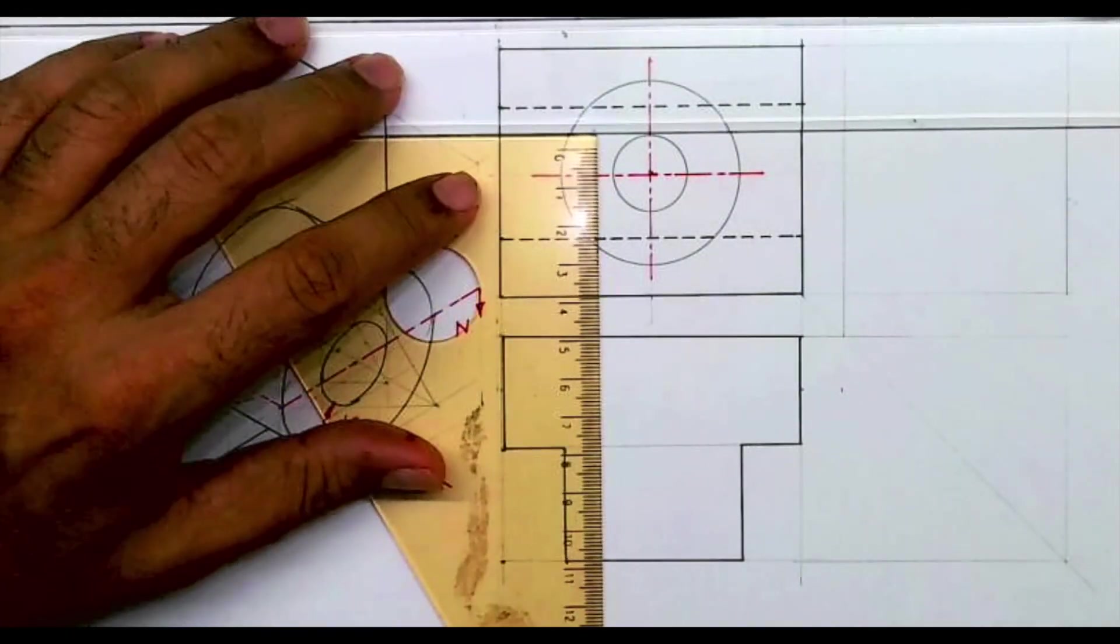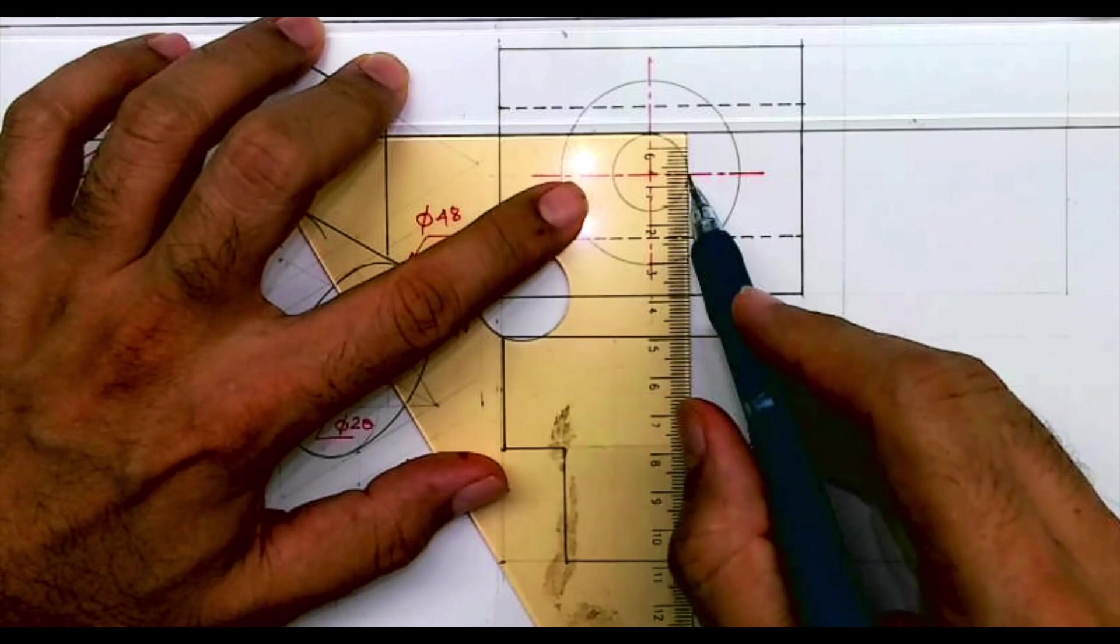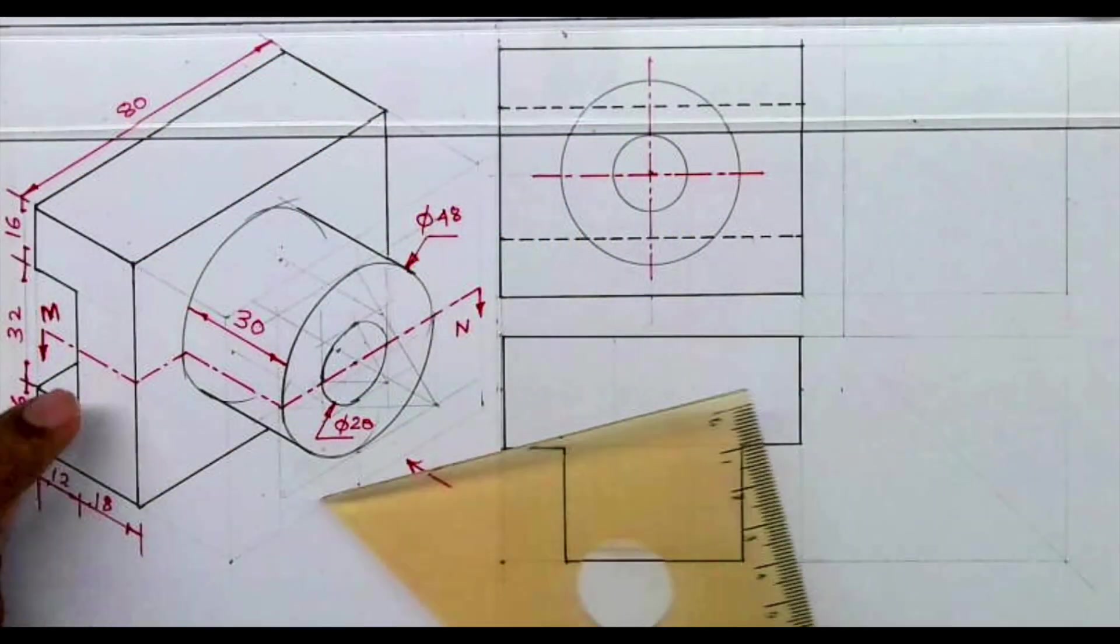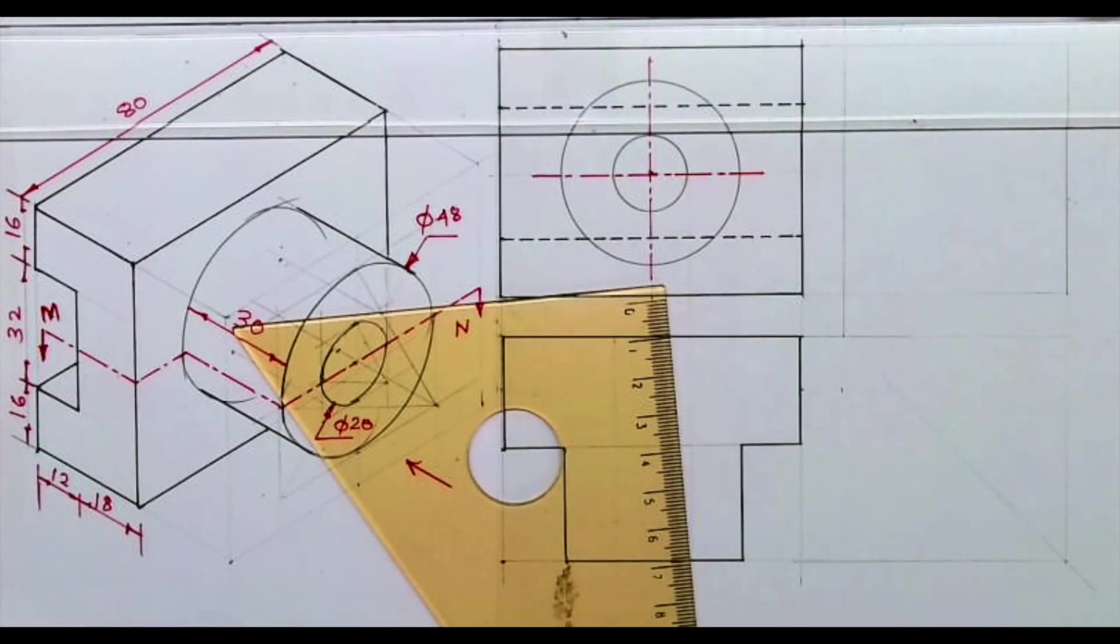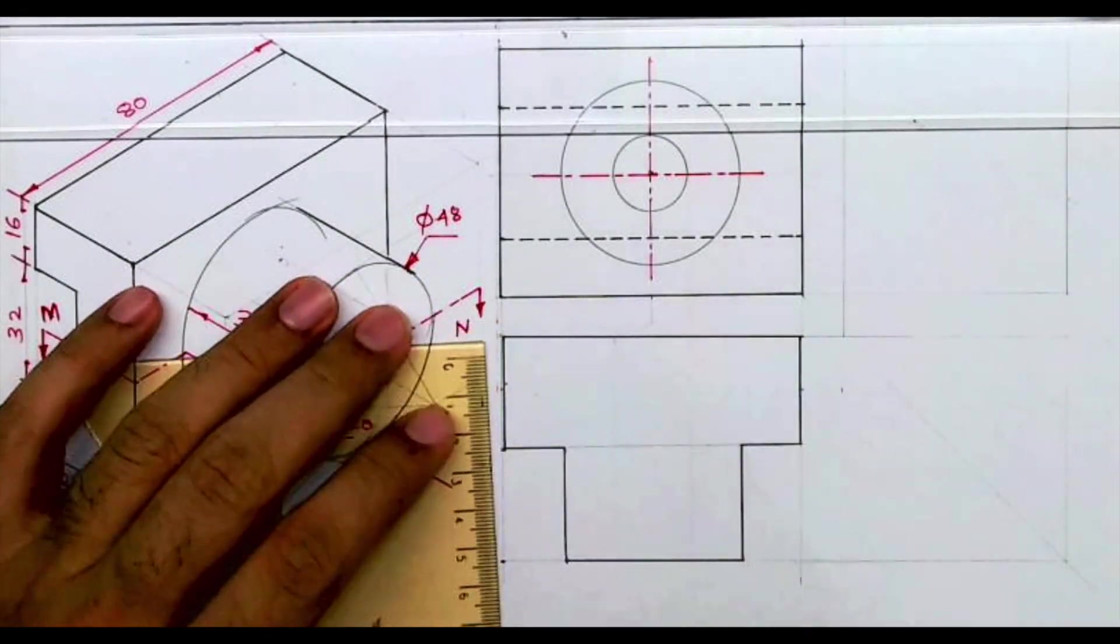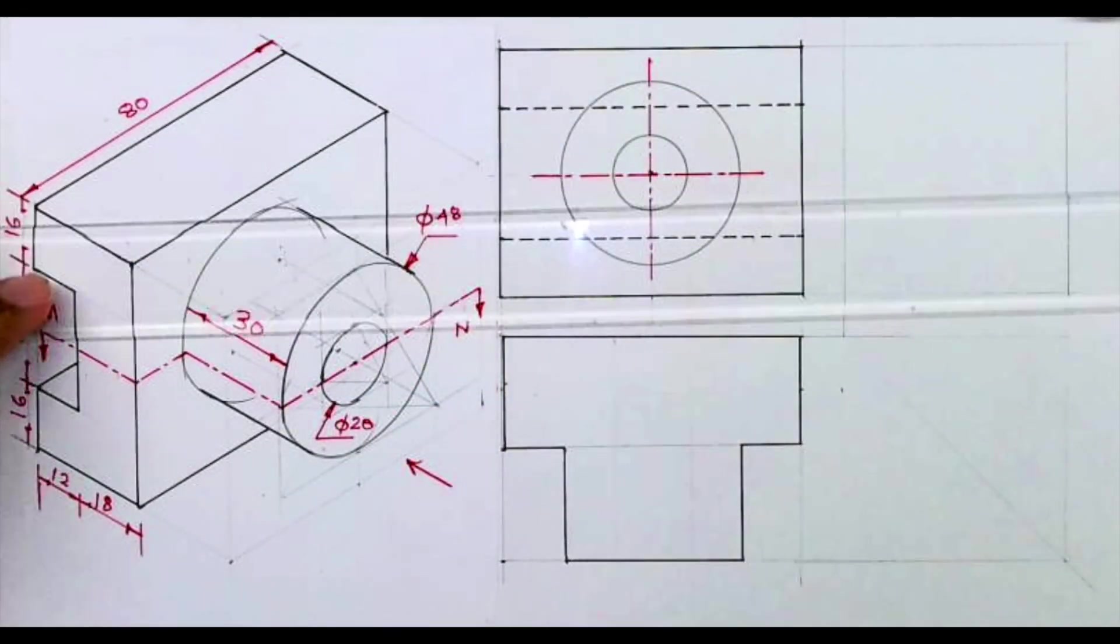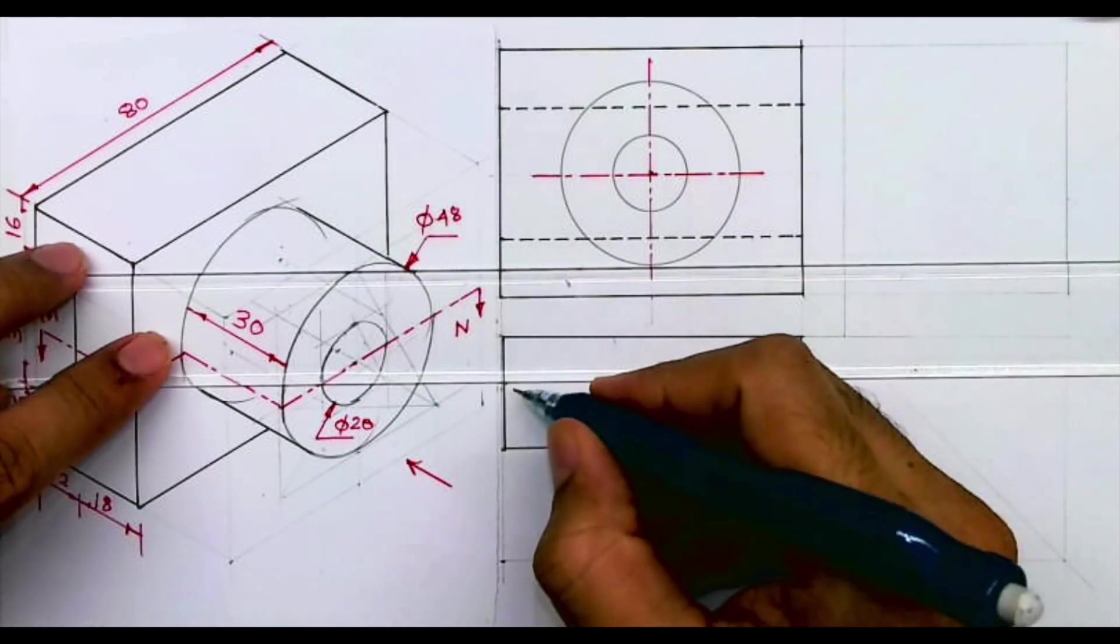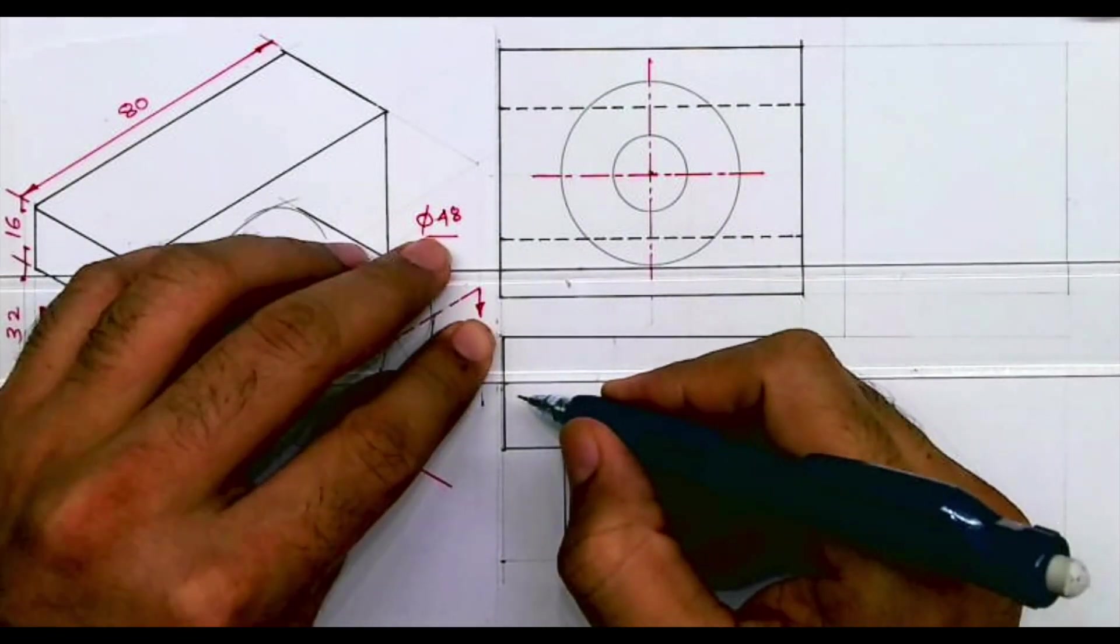So this is boundary and see from here I'm just drawing light line because those lines will be dotted. And you take 12 from here and again you draw line. That this is also dotted line but right now I'm drawing light line.